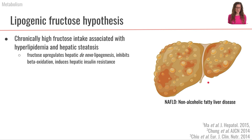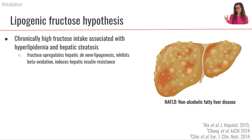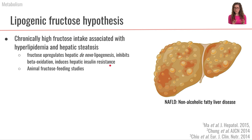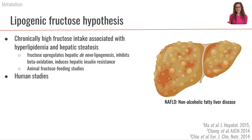Within these animal studies, it has been shown that fructose can upregulate hepatic de novo lipogenesis, inhibit beta-oxidation of fatty acids — meaning we shift toward building but not burning fatty acids — and high fructose diets can induce hepatic insulin resistance. However, most of this data comes from animal feeding studies using high amounts of fructose, which is different from how we tend to consume fructose as free-living humans.